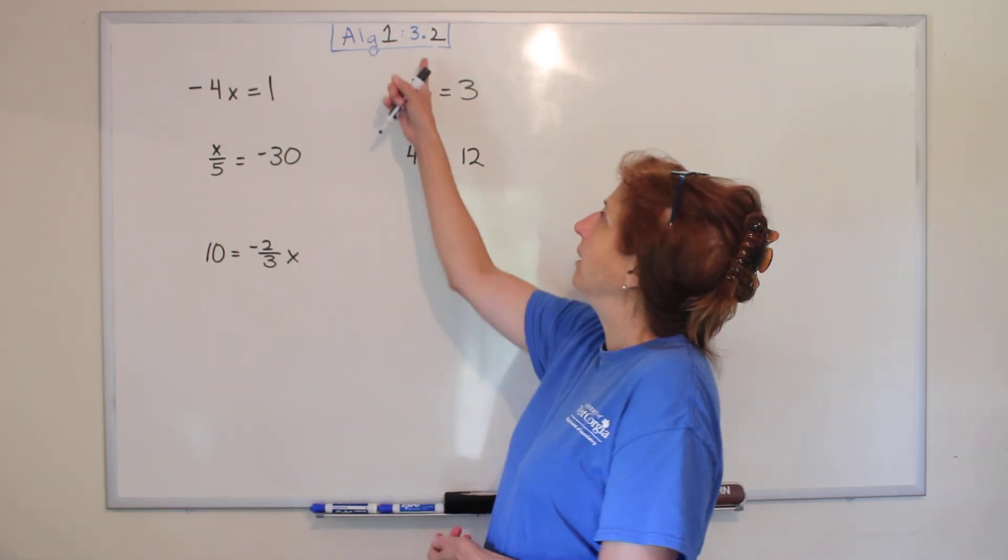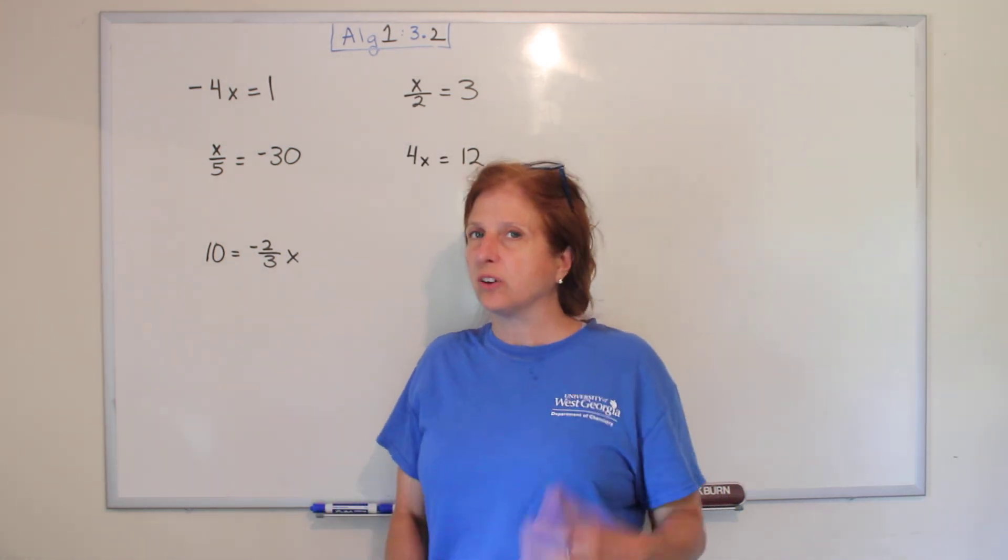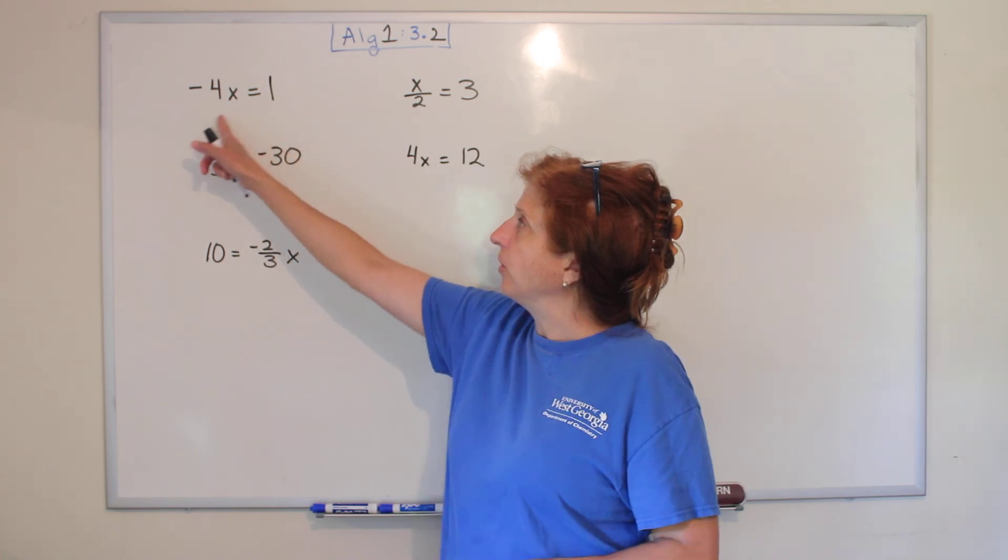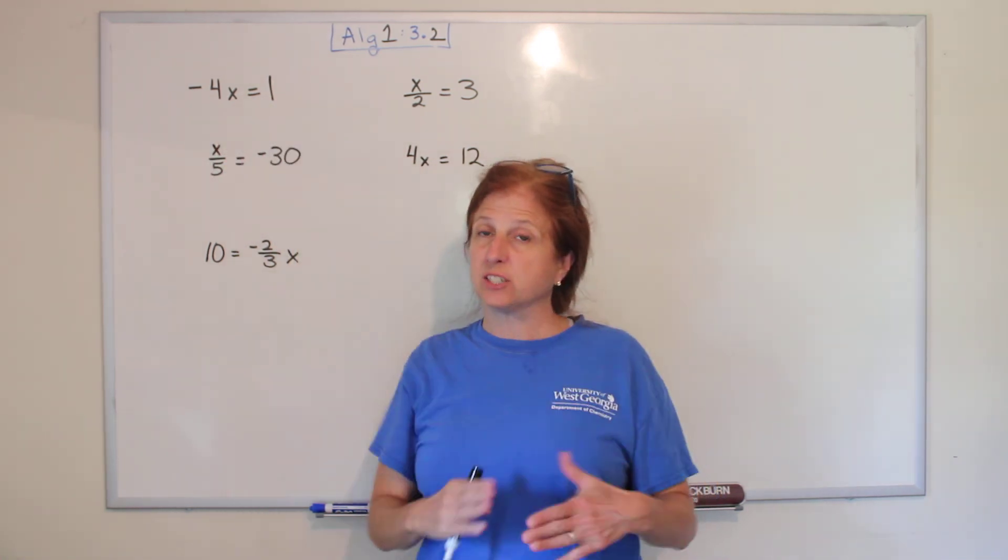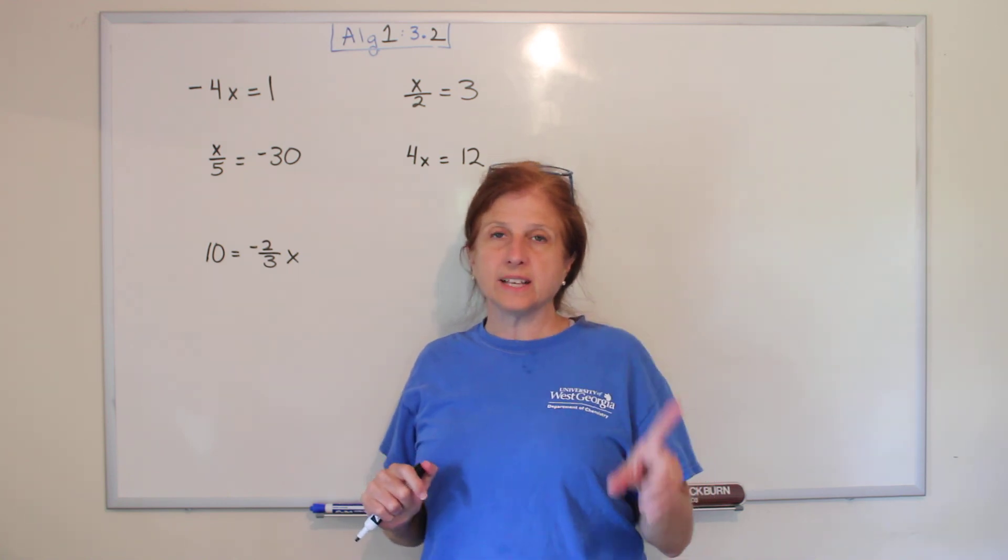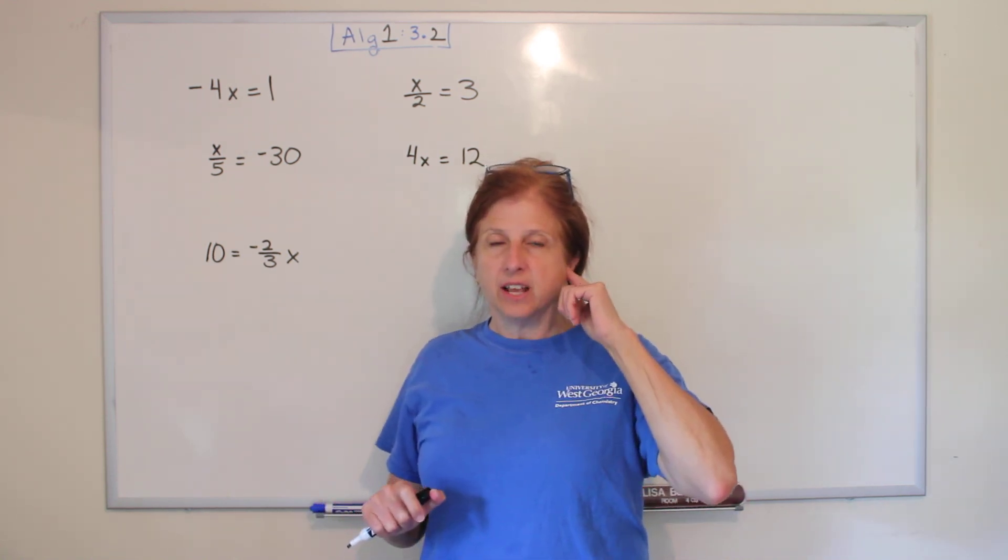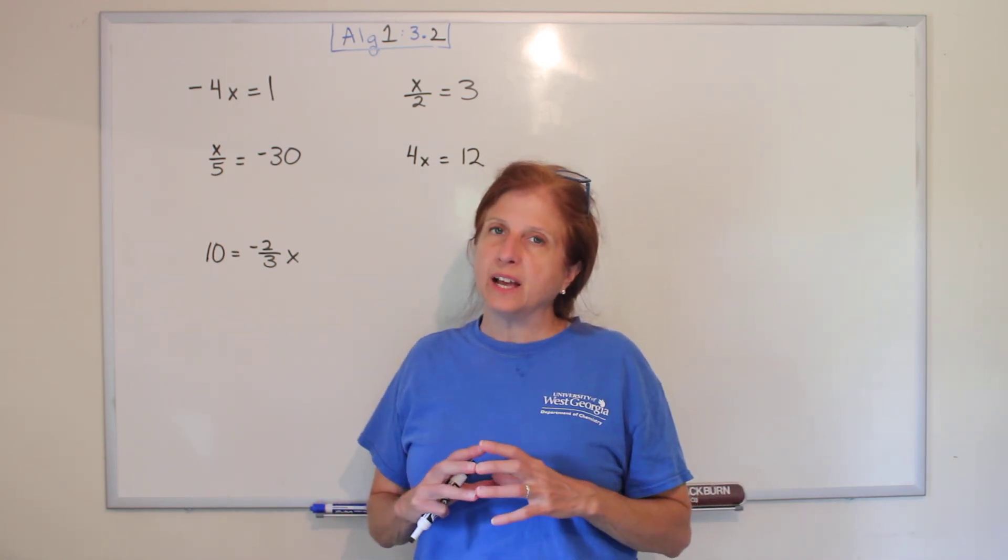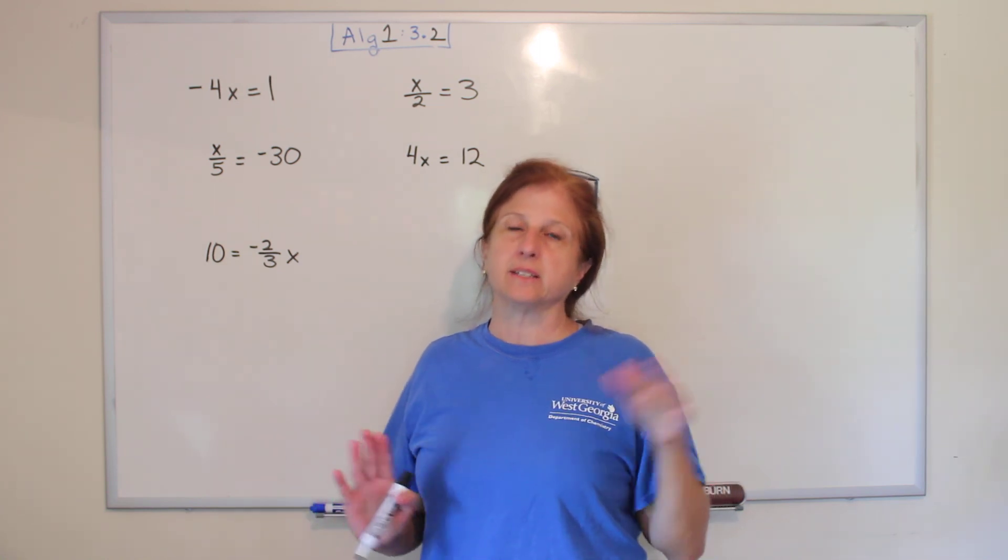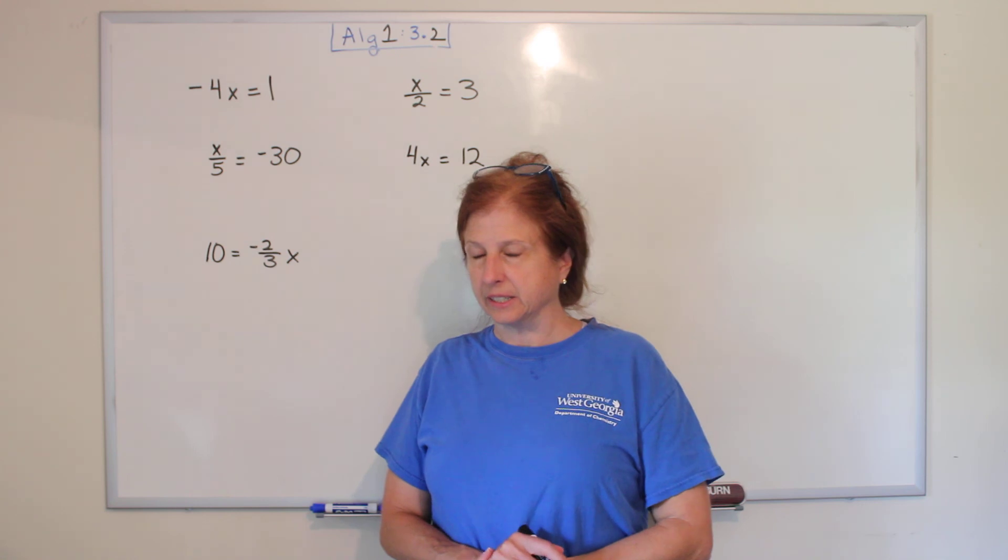Alright, so last time in 3.1, we talked about how you solve for x. You make sure it's an equation that has an equal sign. Then you ask yourself, why is x not alone, and you do the opposite until it is alone. Now sometimes, we talked about last time, that instead we have to make it not so ugly. So sometimes we'll say first, why is it ugly, then why is x not alone.